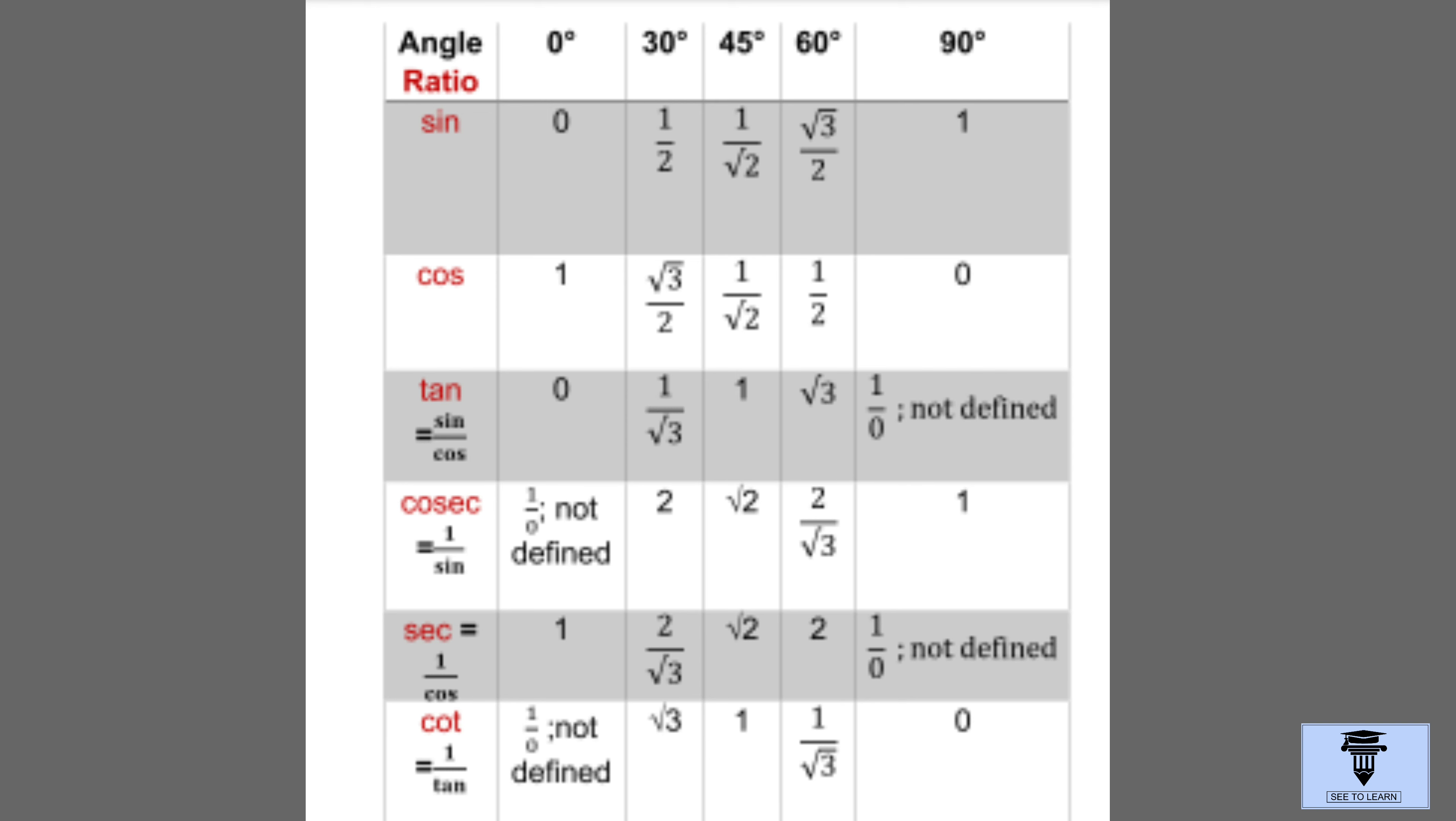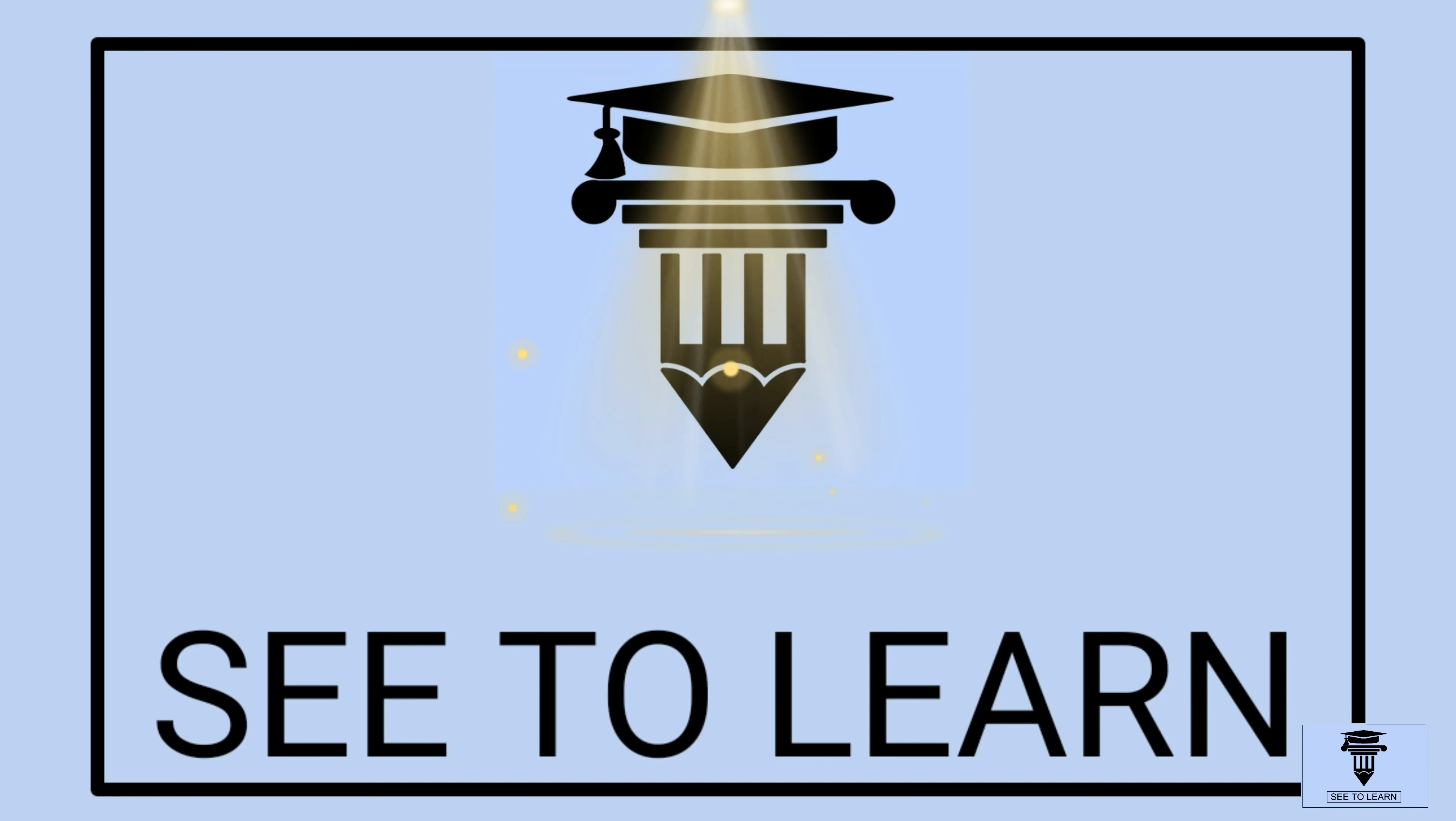While solving numericals, we frequently need trigonometric ratios of some specific angles like 0, 30, 45, 60, and 90 degrees. In short, we need all these values. So, how to remember them? See to Learn in this video brings you a simple and easy trick. Here it is.